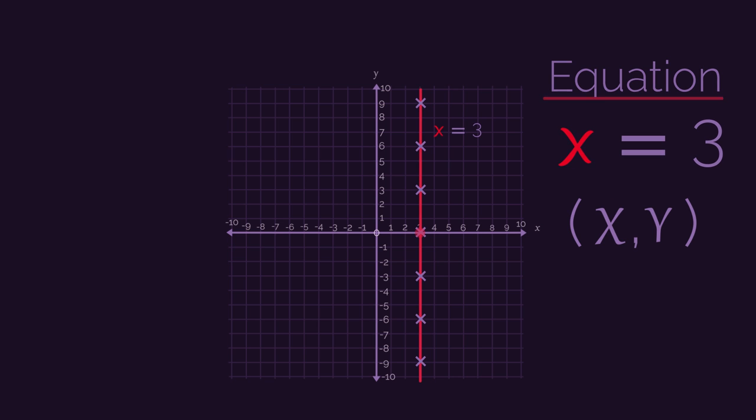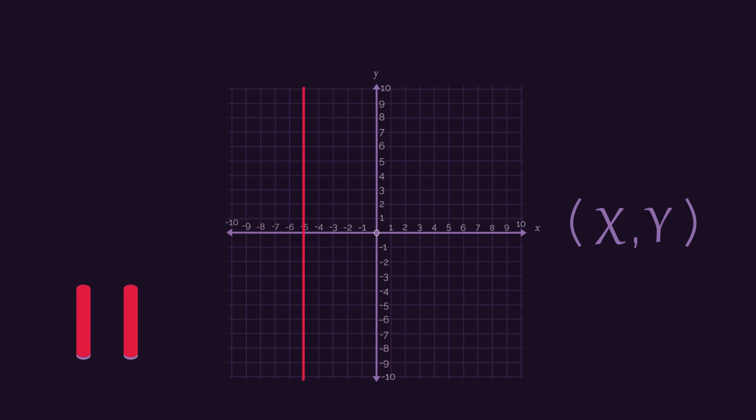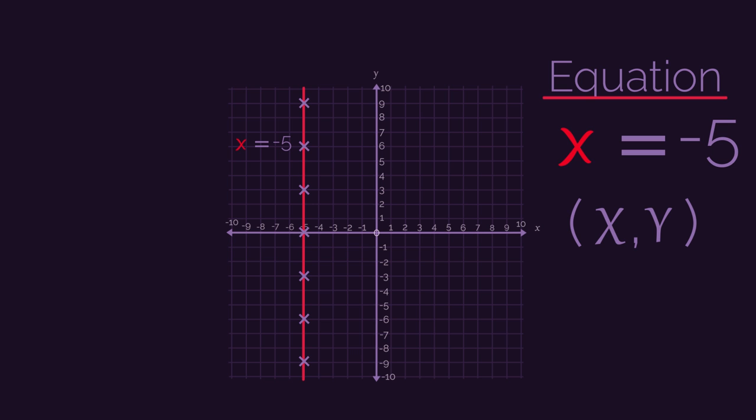So what do you think the equation of this line would be? Pause the video, work out the answer, and click play when you're ready to check. Hopefully you thought x equals negative 5, because all of the points on the line have an x-coordinate of negative 5.